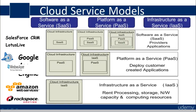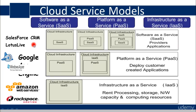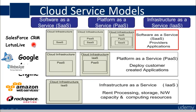Cloud service models — there are models made by various companies such as Salesforce CRM. The cloud infrastructure has three models: SaaS, PaaS, and IaaS. All three services are offered by Salesforce CRM. Software as a Service means that a SaaS provider will be providing you an application which you can access and consume from any device, anytime, anywhere.